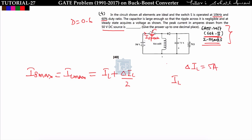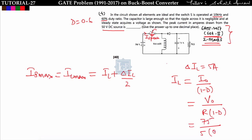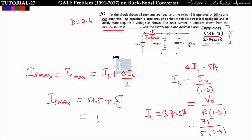Now find il. In the buck-boost converter: il = V_0 / (R × (1 - d)) = 75 / (5 × 0.4) = 37.5 A. Therefore, i_s(max) = il + Δil/2 = 37.5 + 5/2 = 37.5 + 2.5 = 40 A.